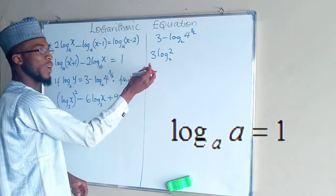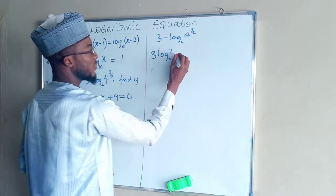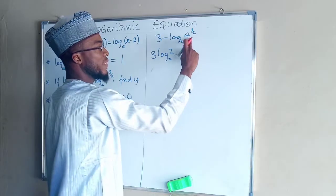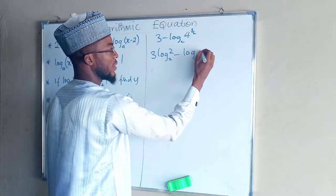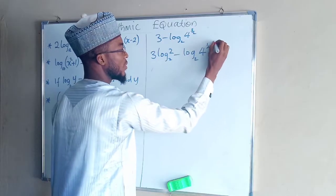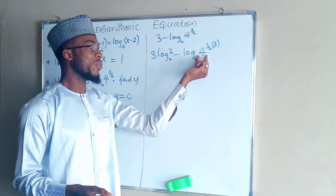Log 2 base 2 is 1 times 3 is 3, so we have not changed anything. So we use the law again. Log, but this one here is 4 power of 1 over 2 times 3, and this one is just the square root of 4, which is 2.